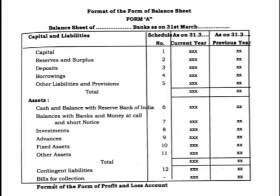Before we take up the question, let us see the format of preparing the balance sheet once again. On the top you have to write 'Balance Sheet of [Company Name]' and in the next line write 'as on' the relevant date. In the table you will have four columns: the first for capital, liabilities and assets; the second for note numbers; the third for current year values; and the last for previous year values.